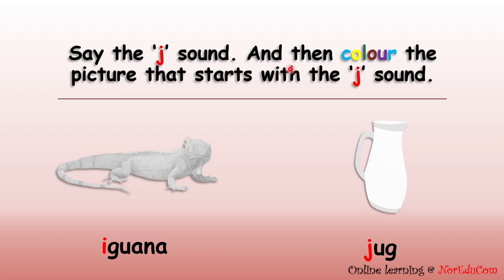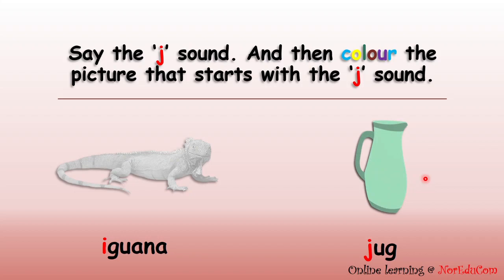Now let's say the J sound and then color the picture that starts with the J sound. Can you name this animal? Yes, this is an iguana. E, E, iguana. It starts with the short sound E, letter I. Not the sound of J. So do not color it. Now, can you name the next picture? Yes, this is a jug. Juh, juh, jug. It starts with the sound of J, letter J. So let's color it. Well done, everybody.